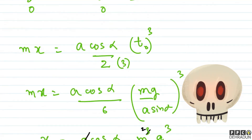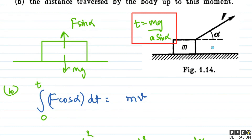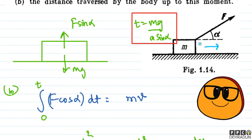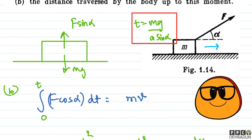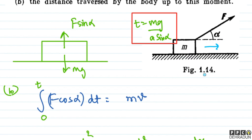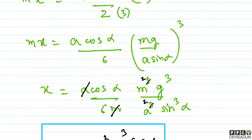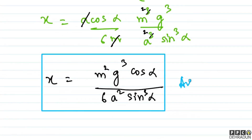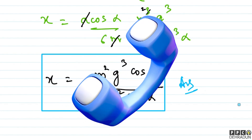हम लोगों ने देखा कि object का जो motion है वो positive x के along ही है 0 से t₀ तक। Object initially rest से start करा था, force उसी direction में लग रही है, इसलिए position ही distance traversed हो जाएगी। Final answer: x = m²g³·cosα / (6a²·sin³α). I hope बच्चों कि आपको यह solution अच्छे से समझ आया होगा। In case कोई doubt रह जाता है, feel free to contact me. Take care!